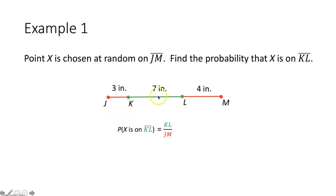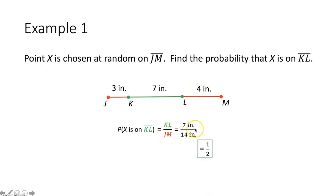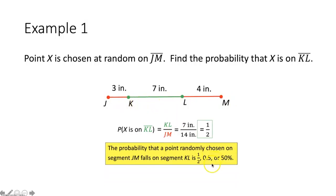The measure of segment KL is 7 inches, which goes in our numerator. The measure of segment JM is 3 plus 7 plus 4, which is 14 inches in our denominator. We simplify and get one half. So the probability that a point chosen at random on segment JM also lies on segment KL is one half, or 0.5, or 50%.